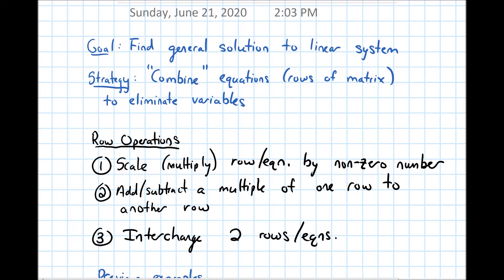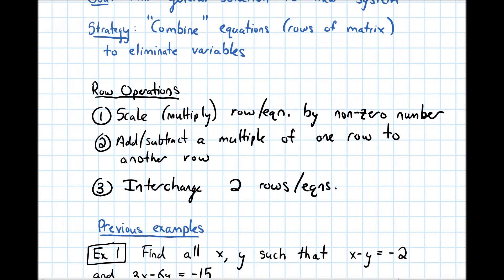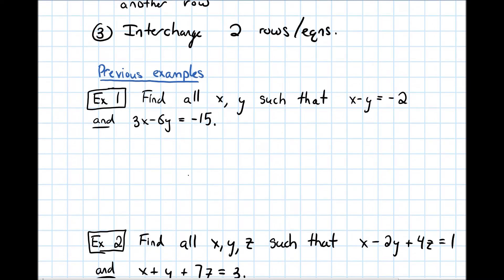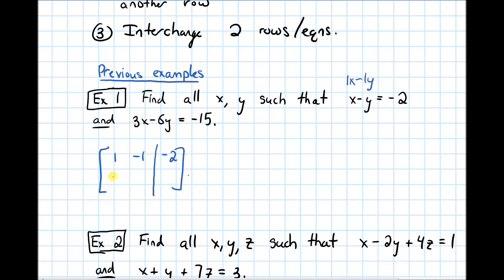Let's look at what this looks like with the examples from the last video. The first example has equations x minus y equals negative 2, and 3x minus 6y equals negative 15. As an augmented matrix, the first row has coefficients 1 and negative 1, augmented with negative 2. The second row has coefficients 3 and negative 6, augmented with negative 15.